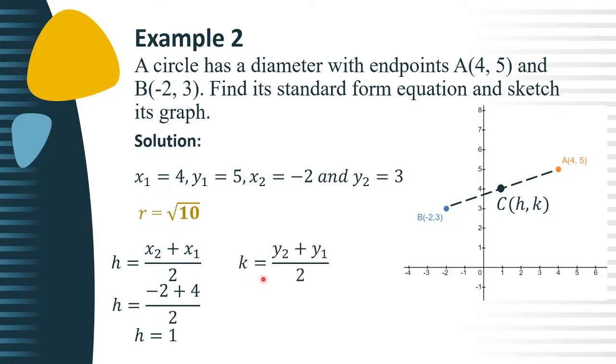Next, for k, we have y sub 2 plus y sub 1 over 2. Substituting the value of y sub 2, which is positive 3, and y sub 1, which is positive 5, we get 3 plus 5, that is positive 8, divided by 2, which is positive 4. Hence, the center is at (1, 4).